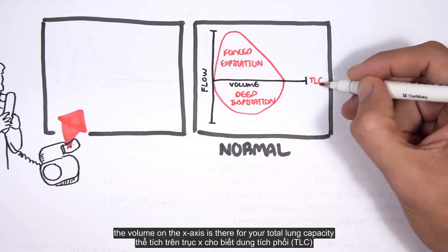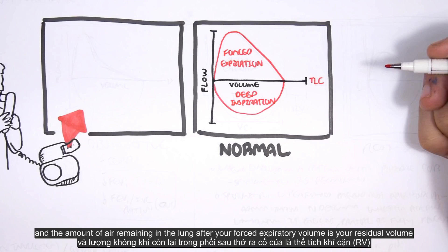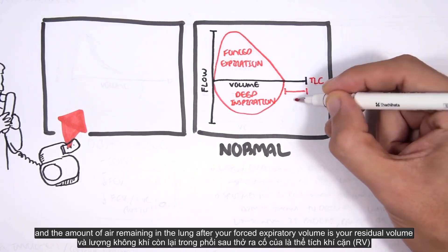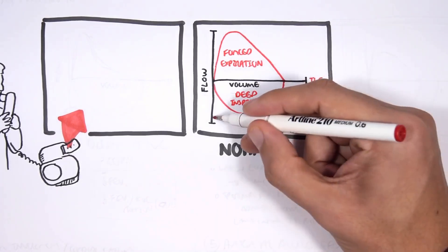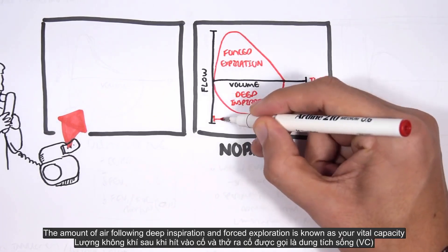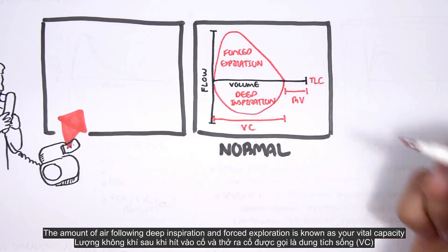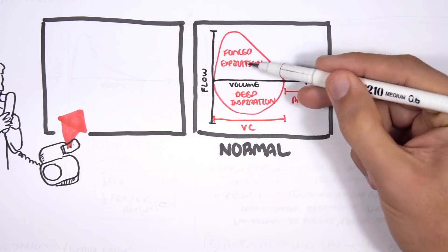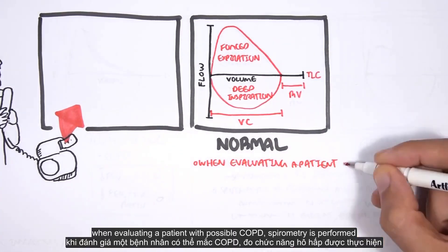We can also find other measurements using this graph. The volume on the x-axis is your total lung capacity, and the amount of air remaining in the lung after your forced expiratory volume is your residual volume — this always stays there. The amount of air following deep inspiration and forced expiration is known as your vital capacity.